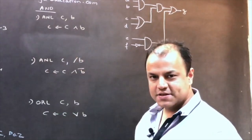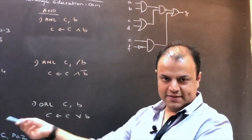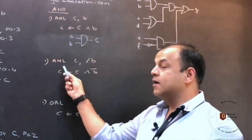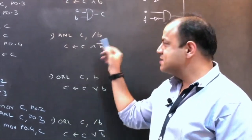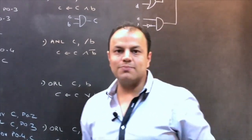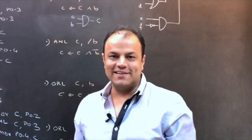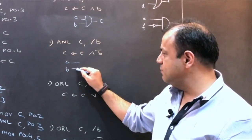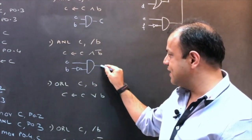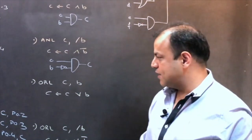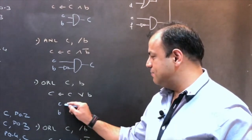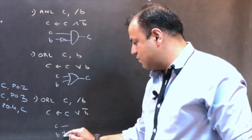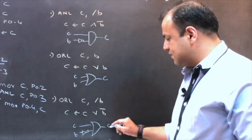ANL C, B — carry flag will be ANDed with the bit, and the result stored in the carry flag. ANL C, /B — slash B means B bar, because you can't type an overline. The bit's complement will be ANDed with the carry flag and the result stored in the carry flag. Similarly, ORL C, B — carry flag and the bit will be ORed and the result stored in the carry flag. ORL C, /B — carry flag and the bit will be ORed, but the bit will first be complemented, then ORed, and the result stored in the carry flag.